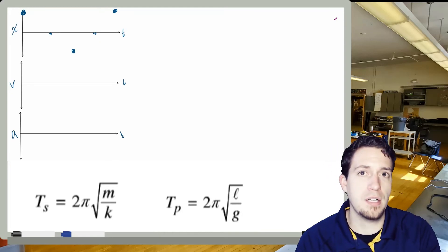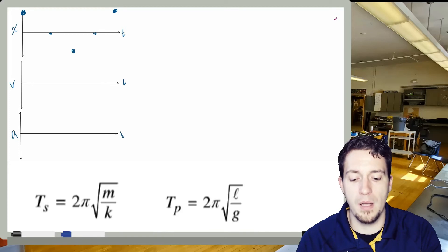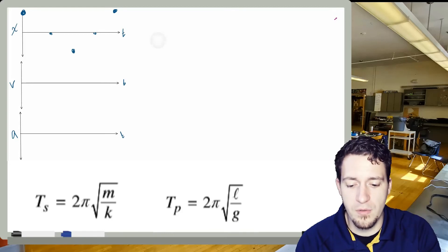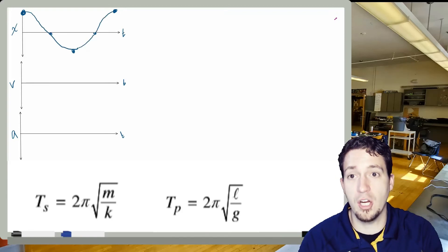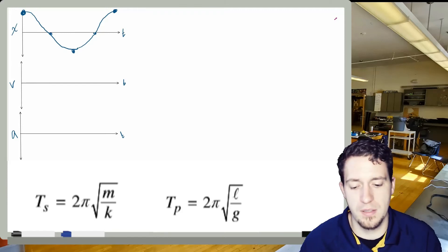And then in between those two spots is actually where it's going to hit a point of equilibrium, which is where x is zero. Now, this graph actually will have a curvy shape to it because the force is non-constant, it's always changing.